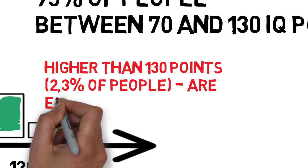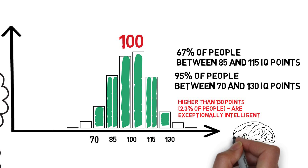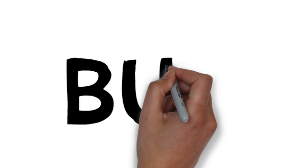People with higher than 130 IQ points, about 2.3% of people, are exceptionally intelligent and they can be a member of MENSA International.